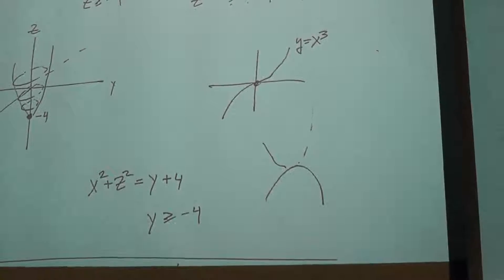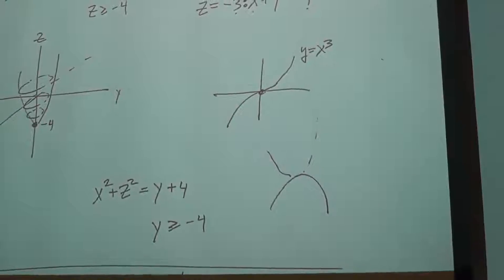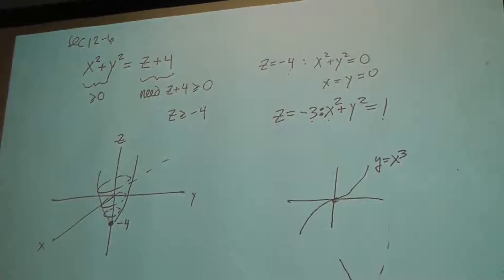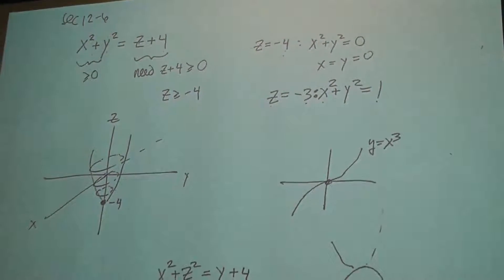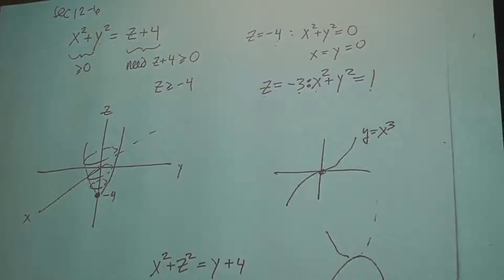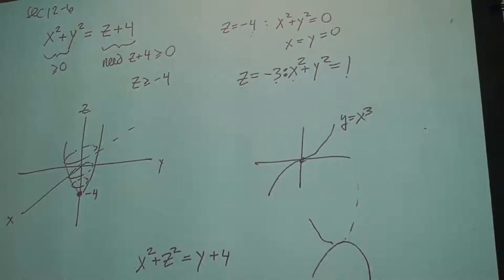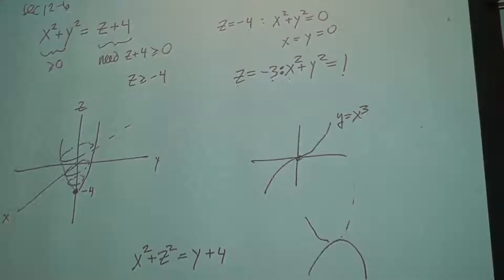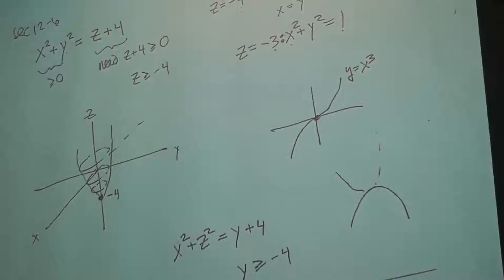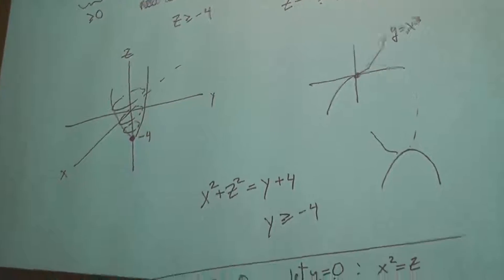This is section 12-6. Section 12-7 looks at two different coordinate systems other than the Cartesian coordinate system. So I generally would prefer doing that when we need it. Because if I run through all these definitions now, by the time we need it, which will be with the integration, you'll have forgotten it. And it's disjointed from everything at this point.